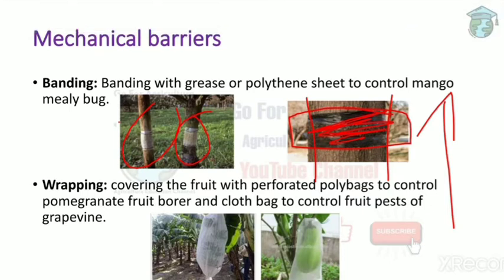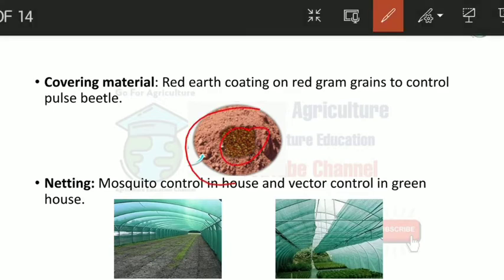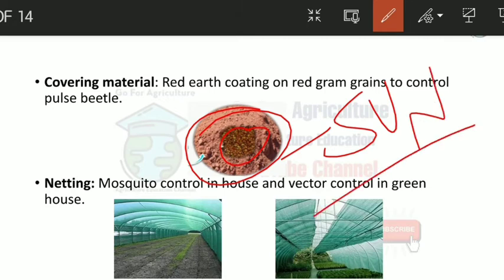Next is wrapping: we cover fruit still on the tree with a poly bag, which helps control pomegranate fruit borer. A cloth bag can be used to control fruit pests of grapevine. Another covering method involves mixing red gram grains into red soil and sun drying them, which helps control pulse beetle.